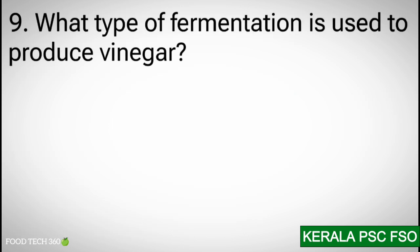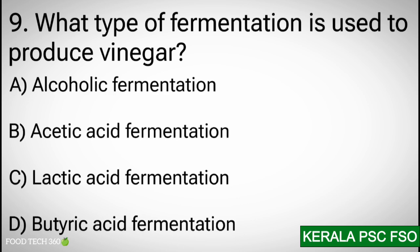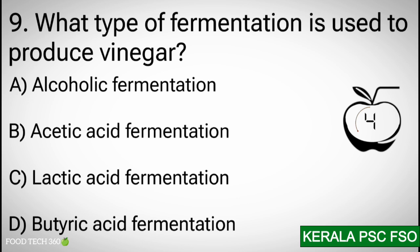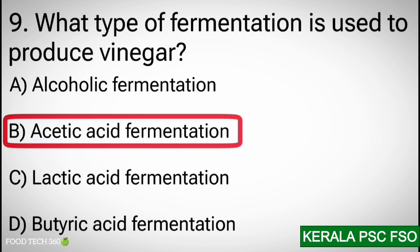Q9. What type of fermentation is used to produce vinegar? A) Alcoholic fermentation. B) Acetic acid fermentation. C) Lactic acid fermentation. D) Butyric acid fermentation. Correct answer: B — Acetic acid fermentation.